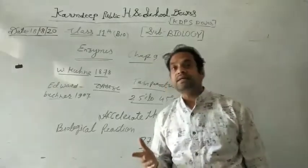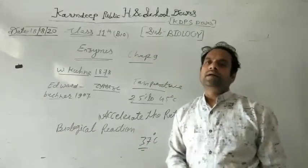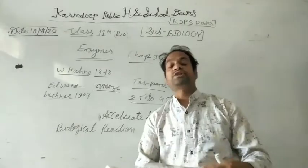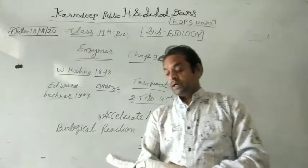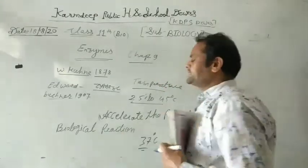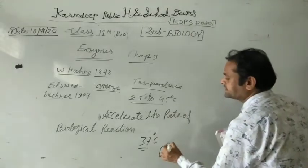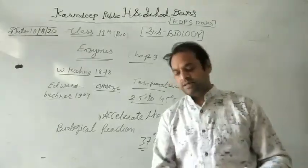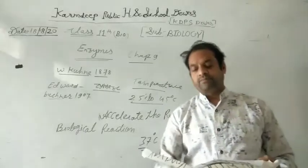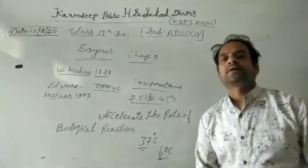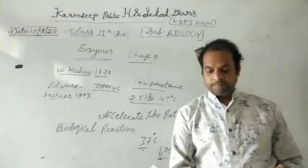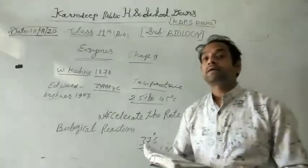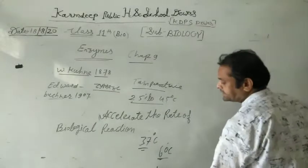At higher temperatures, enzyme function decreases. At low temperatures, around 60 degrees centigrade, the enzyme becomes colorless. The boiling point of water is 100 degrees centigrade.